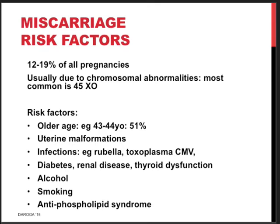What are the risk factors? There are a whole number. Aging is a risk factor — for instance, a woman aged 43 to 44 years has a 51% risk that the pregnancy will miscarry, based on chromosomal abnormality risk. Uterine malformations, such as a uterine septum, can result in miscarriage. Various infections — rubella, toxoplasma, CMV — though they are not very common in Australia.